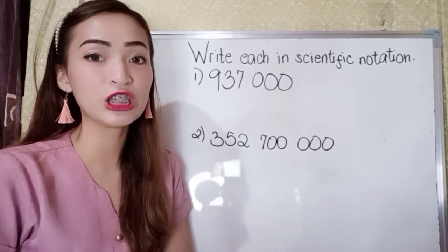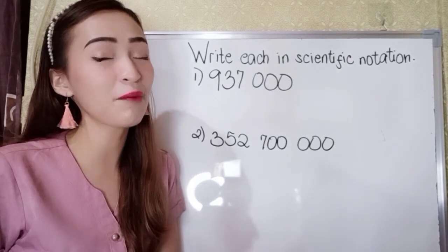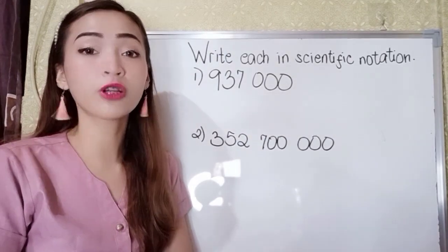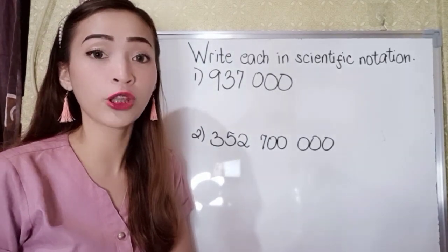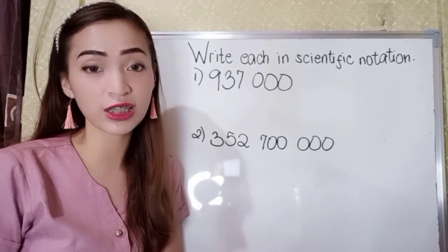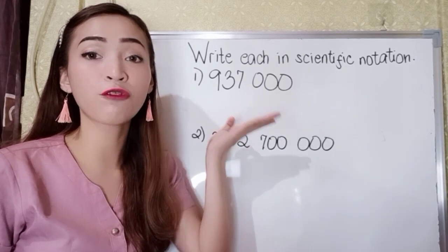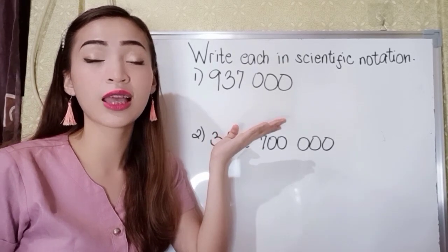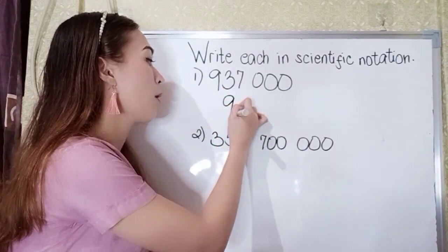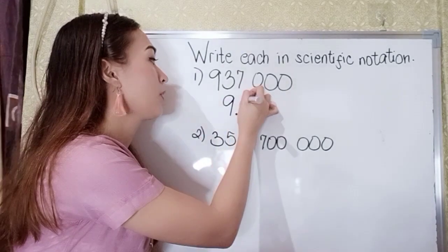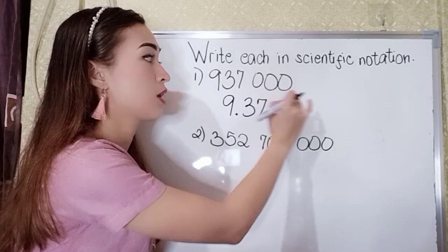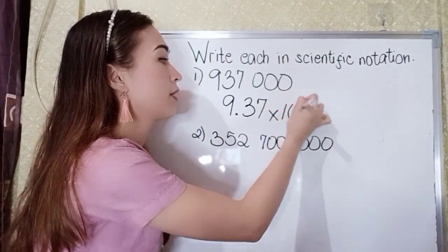Okay, we have here for example: write each in scientific notation. For number one, we have 937,000. What we're going to do is just to place the decimal point on the right side of our first non-zero digit in our given. So here in number one, the first non-zero digit is 9. So it will become 9 point, and we don't need to write these zeros — times 10.